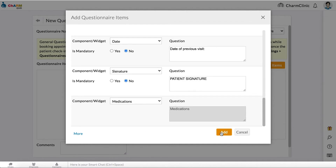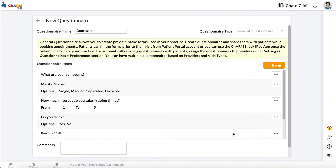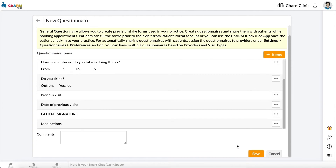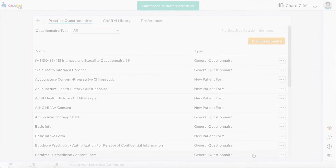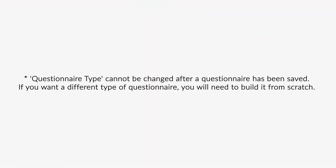Click Add, then Save Questionnaire. Note that questionnaire type cannot be changed after a questionnaire has been saved. If you want a different type of questionnaire, you will need to build it from scratch.